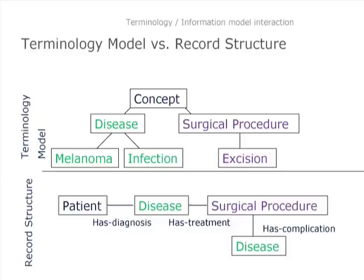Here's our record structure. Melanoma and infection can fill in the disease slots. The surgical procedure of excision can fill in the surgical procedure slot. Who the patient is is filled in by a separate element, an identifier for the patient.